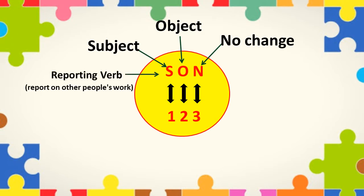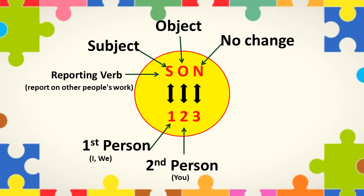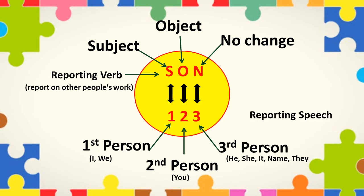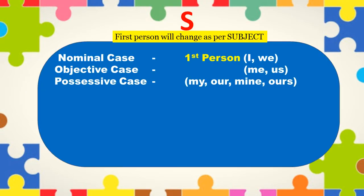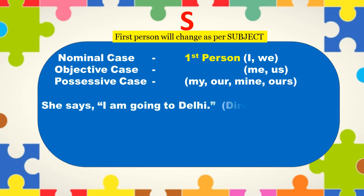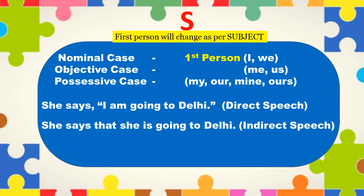As per the SUN concept, pronouns and possessive adjectives of the first person are changed according to the subject of the reporting verb. For example, in direct speech it is given: she says, 'I am going to Delhi.' In indirect speech it will become: she says that she is going to Delhi. Here 'I am' is replaced by the reporting verb subject 'she'.